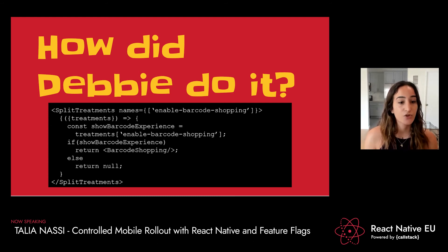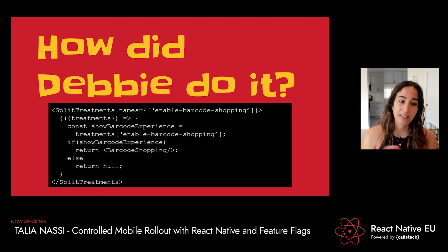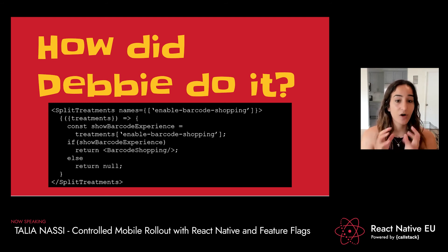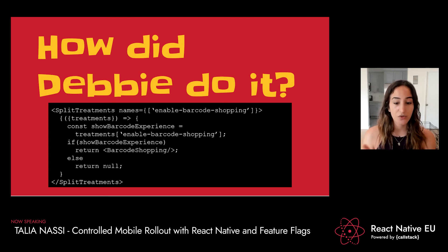This is how you can control your user's experience without pushing up new code. As long as Debbie has SplitTreatments in her render component, she can go into the Split UI and say: I want only internal users to initially see this feature, then test it in production, then roll it out to everyone. Or she can say: I only want people in this region or with this device type to see the feature, and anyone else won't experience the barcode feature. Everything can be configured in the Split UI — you don't have to touch any source code or push up any new code on GitHub. Everything is done in the Split UI.